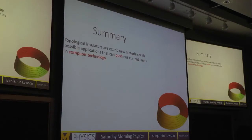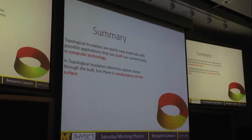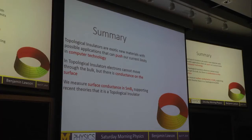Our research shows that SMB6 does have conductance only on the surface, and not on the inside. This supports the idea that it is a topological insulator. To summarize: topological insulators are a completely new type of matter that's very recently discovered, with potential applications to push the limits of our modern computing technology. The interesting feature is that electrons can only move around the surface but not through the inside, and our SMB6 sample confirms this. Thank you very much.